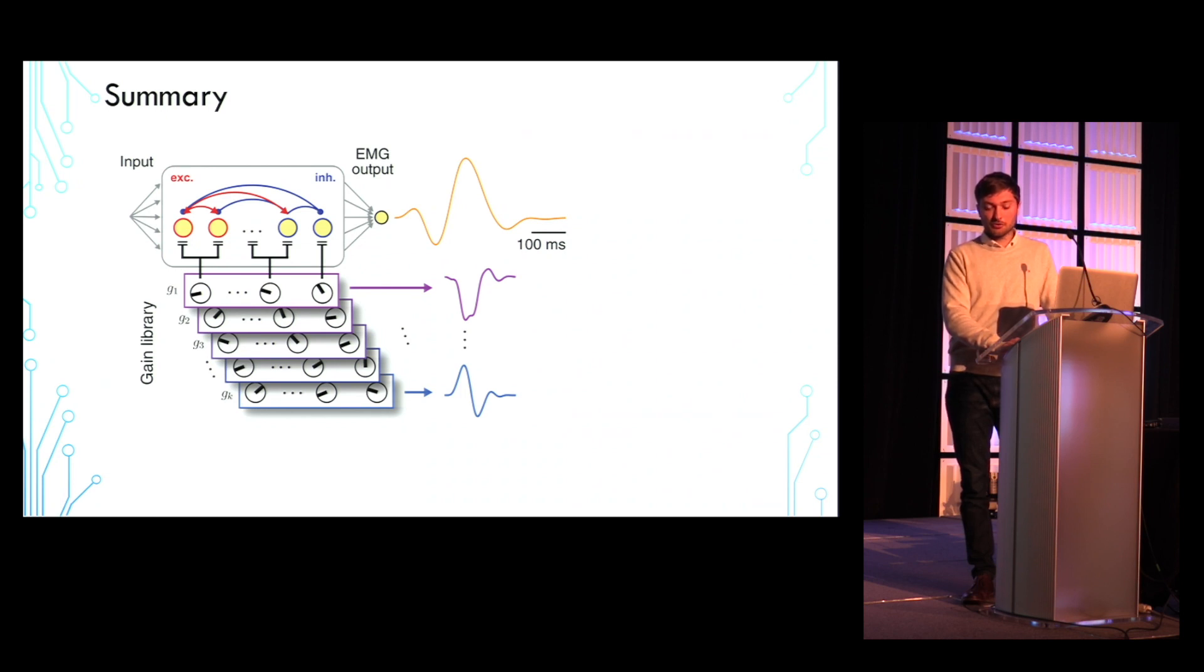So for sure, with the gain libraries we have less parameters. But then I don't know how you would have a library of synaptic connectivity matrices. I don't see how that might occur easily. But for sure there's many more parameters if you change the synapses.